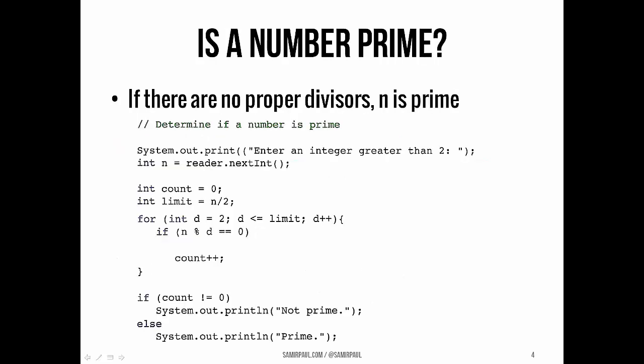Let's take it a little further. This next example is based on the last one. Here we want to determine whether a particular number is prime. There are faster, more computationally efficient ways to figure this out, but one way we can do it is just by counting the number of proper divisors. If there are no proper divisors for a particular number, then we know that number is prime. If there are more than zero proper divisors, then we know the number is definitely not prime.